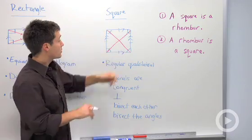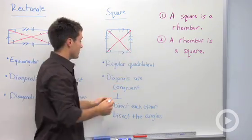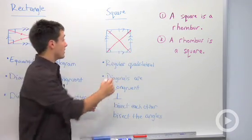So the diagonals are congruent to each other. The diagonals bisect each other and are perpendicular.